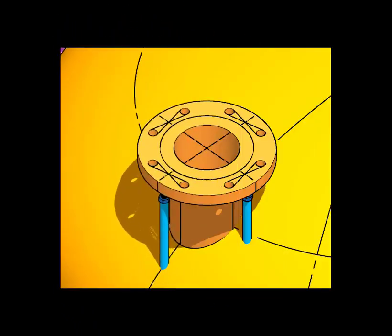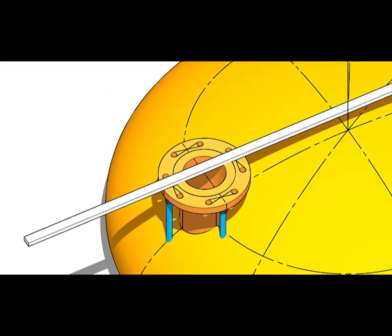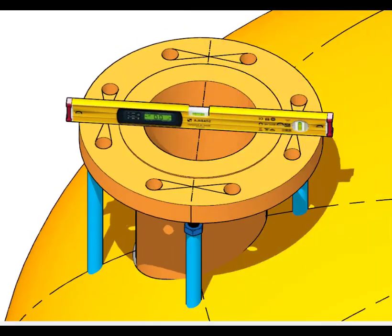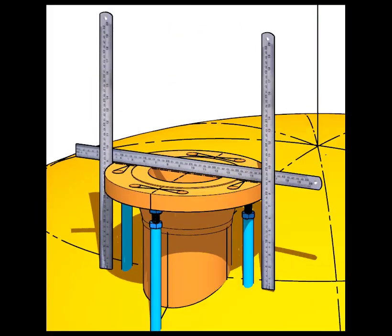Match the center line of the nozzle and the center of the dish end. Maintain the level of the nozzle both along and across. Correct the height of the nozzle on both sides of the flange. Check the level again. If everything is under the allowed tolerance, tack weld the nozzle with the dish end.